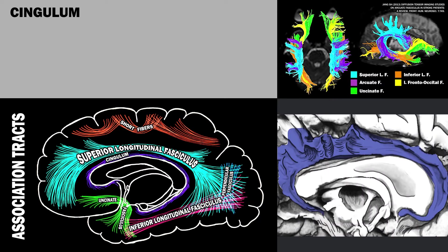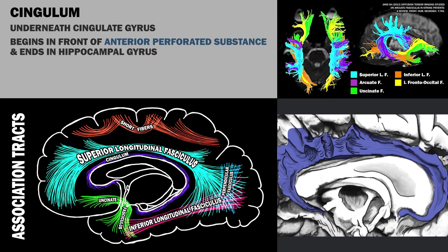The cingulum is an association tract that runs underneath the cingulate gyrus along the medial surface of the brain. This tract is found over top of the corpus callosum, beginning in front of the anterior perforated substance and ending in the hippocampal gyrus. The anterior part of the cingulate cortex is important for emotions, especially depression and apathy, while the posterior portion is involved in cognitive functions such as attention, memory, and visuospatial skills.